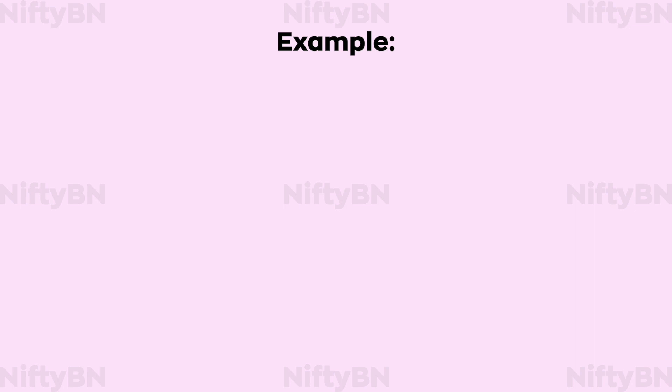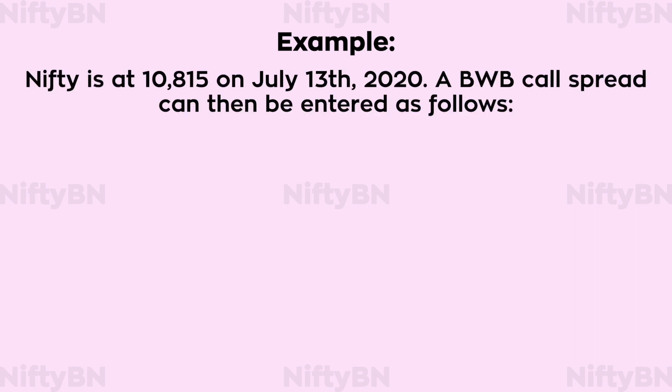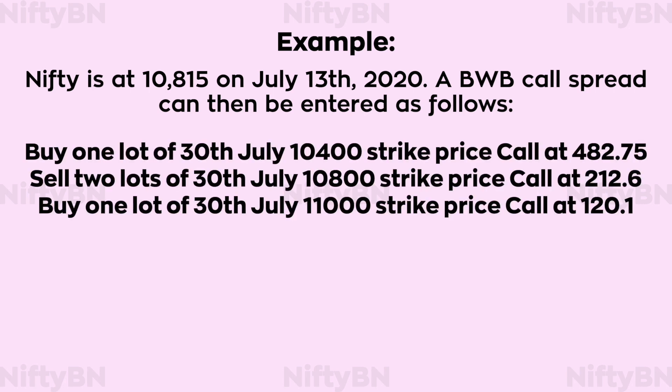Now let's look at an example. Nifty is at 10,815 on July 13th, 2020. A broken wing butterfly call spread can then be entered as follows: buy 1 lot of 30th July 10,400 strike price call at 482.75; sell 2 lots of 30th July 10,800 strike price call at 212.6; buy 1 lot of 30th July 11,000 strike price call at 120.1.